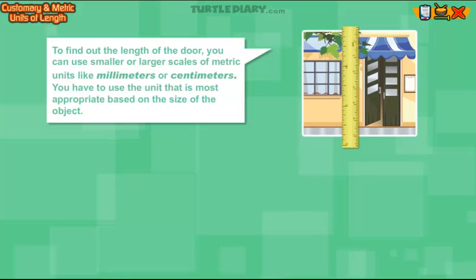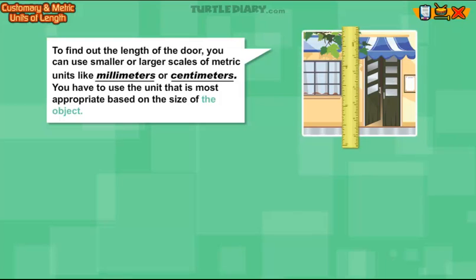For example, to find out the length of the door, you can use smaller or larger scales of metric units like millimeters or centimeters. You have to use the unit that is most appropriate based on the size of the object.